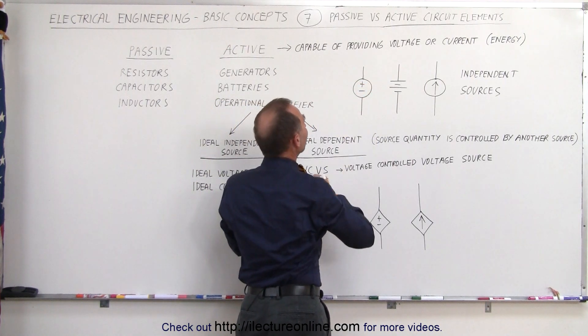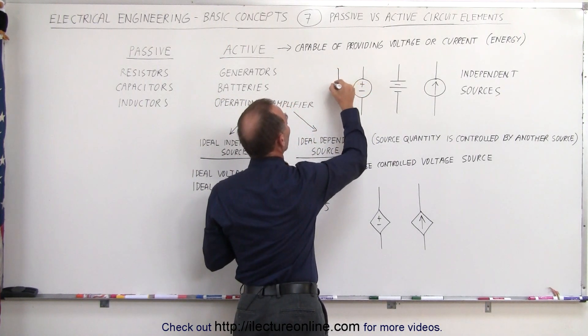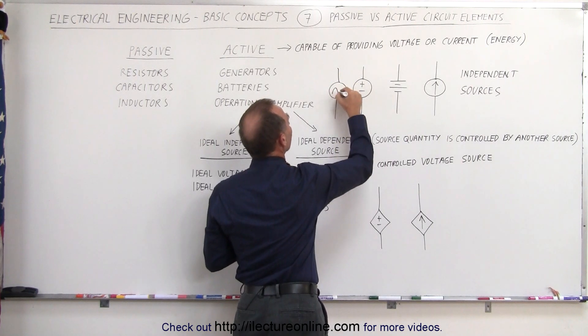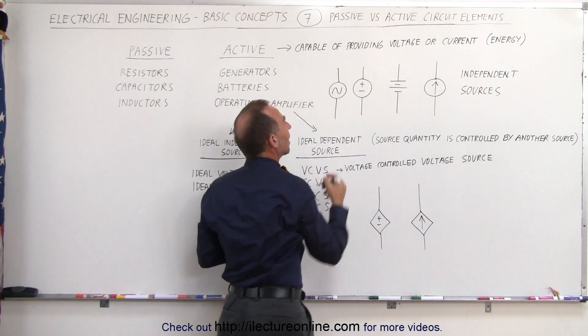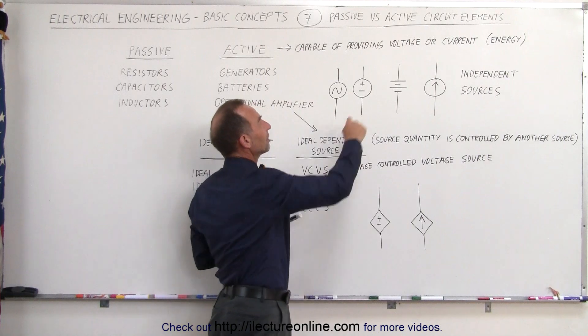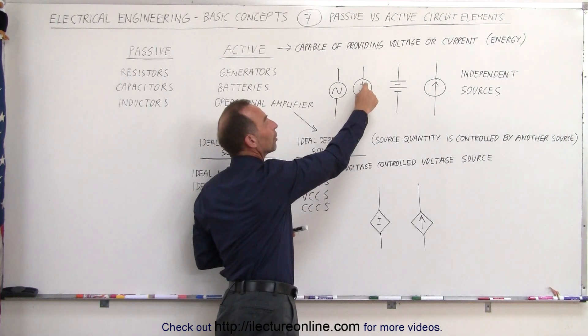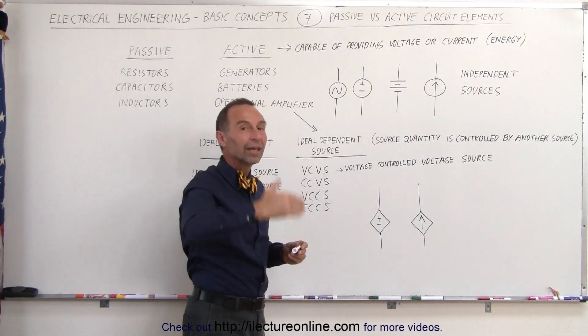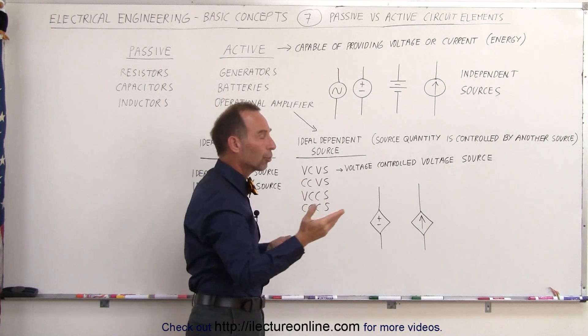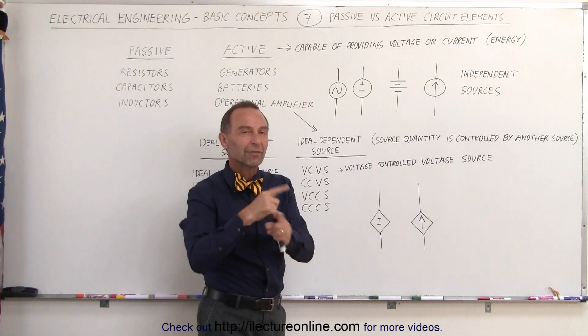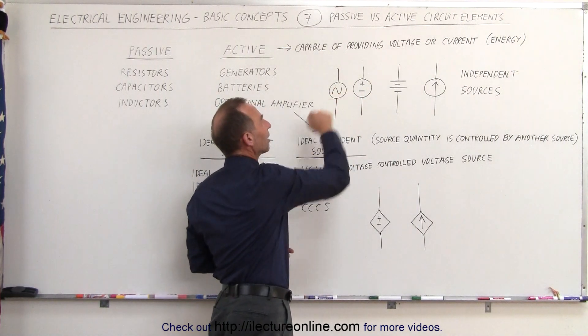When we have a plus or minus that means the same thing as if we had a little squiggly line like a sine wave. This means time dependent or time varying. When we have a time varying source we can either put a plus minus in there meaning that it changes direction, it's an AC current, sometimes it's positive sometimes negative, it switches around just like a sine wave.